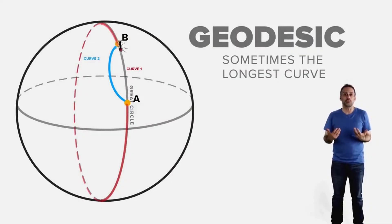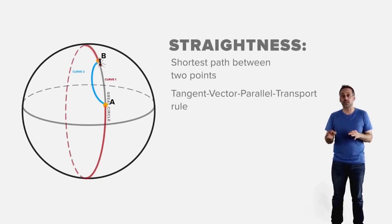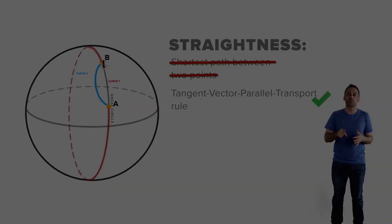Curves between two points. So the shortest path rule for straightness doesn't generalize, but the tangent vector parallel transport.